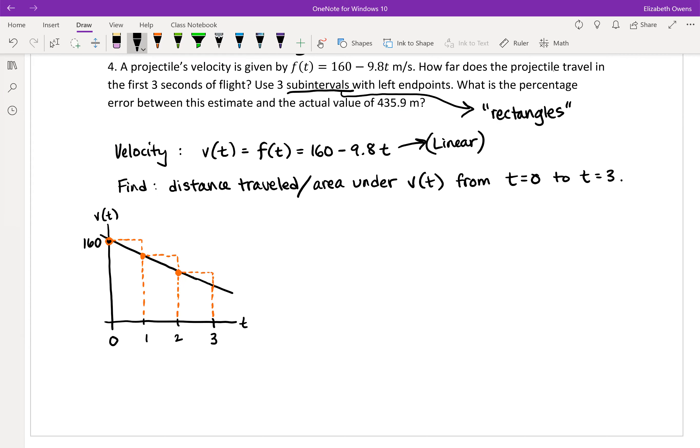So our distance traveled here is going to be the area under the curve. I'm going to call this A sub L3 for left endpoints, three rectangles. And our first rectangle is one unit wide. Height is given by f of zero. Second rectangle is one unit wide. Height is given by f of one. And the third rectangle is one unit wide. Height is given by f of two. And that should be multiplied there because that's width times height.